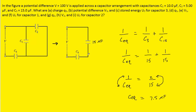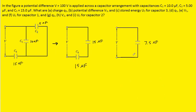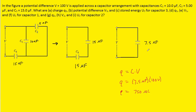We combine them in a third drawing. Now we've accomplished our first goal of simplifying the circuit to one equivalent capacitor. Our next step is to calculate the total charge on this equivalent capacitor using Q = CV, where Q is charge, C is capacitance, and V is potential difference. Plugging in 7.5 microfarads and 100 volts gives us 750 microcoulombs.